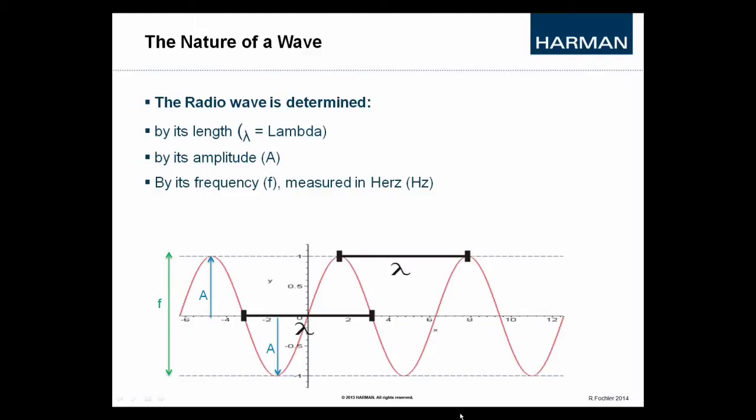So let's have a closer look onto the nature of a wave. A physical wave, whether it's a sound wave or an electromagnetic wave, is determined by a number of figures, which are the wavelength, the amplitude, the frequency and the speed. So the wavelength is abbreviated by a Greek letter called lambda, and it gives us the distance between one wave peak to the next, or one zero crossing point to the next. So every full cycle is one wavelength.